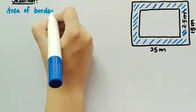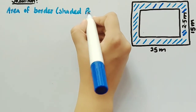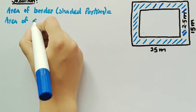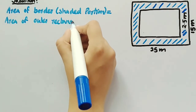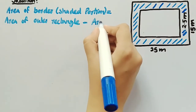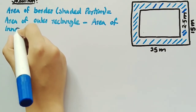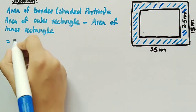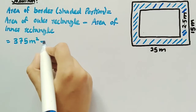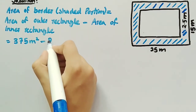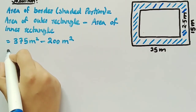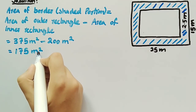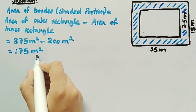Now we will find the area of the border or shaded portion, which is equal to area of outer rectangle minus area of inner rectangle. Substituting the values: 375 meter square minus 200 meter square. Subtracting 200 from 375 we get 175 meter square. So area of border or shaded portion is equal to 175 meter square, and this is the solution of the given question.